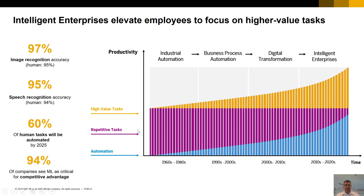Looking at this chart, in the 60s to 80s there were a lot of repetitive tasks, a lot of data entry, a lot of people actually processing transactions. As we see more and more automation coming through, what we're starting to see is those repetitive tasks get reduced through the digital economy and digital transformation — reducing paperwork, reducing even emails, and working collaboratively with business partners through our system, therefore allowing our users and employees to concentrate on high-value tasks. That's really what this is all about.